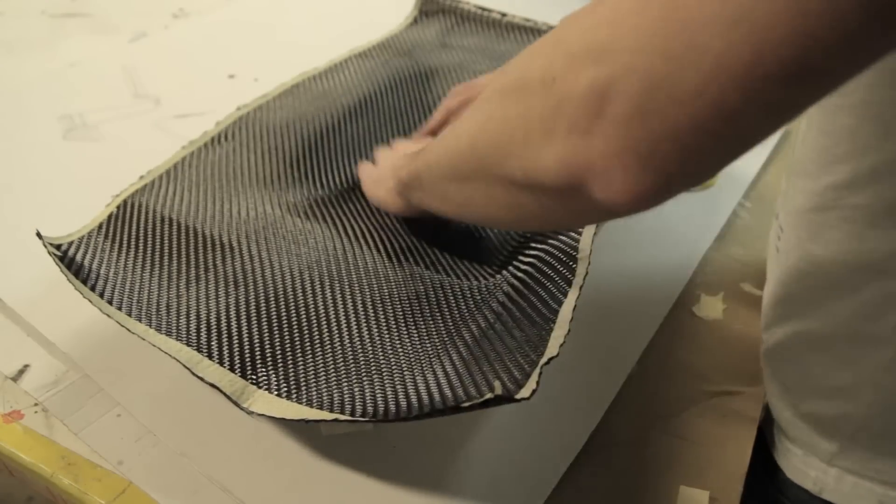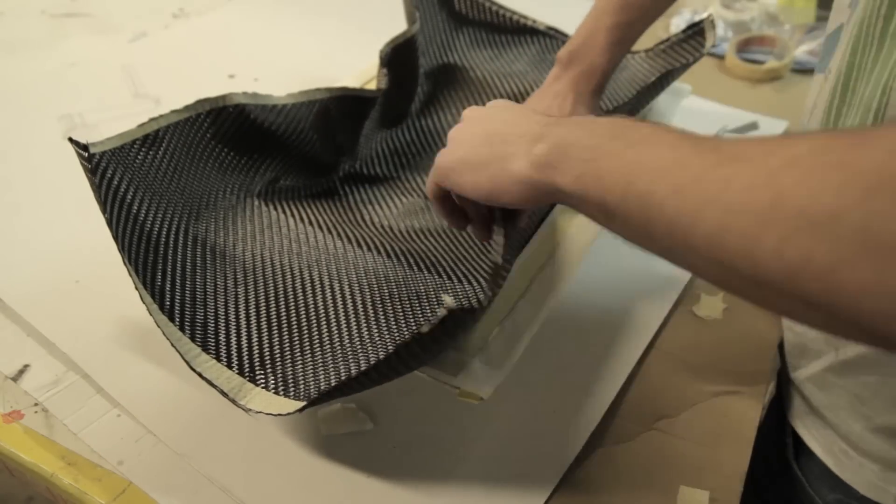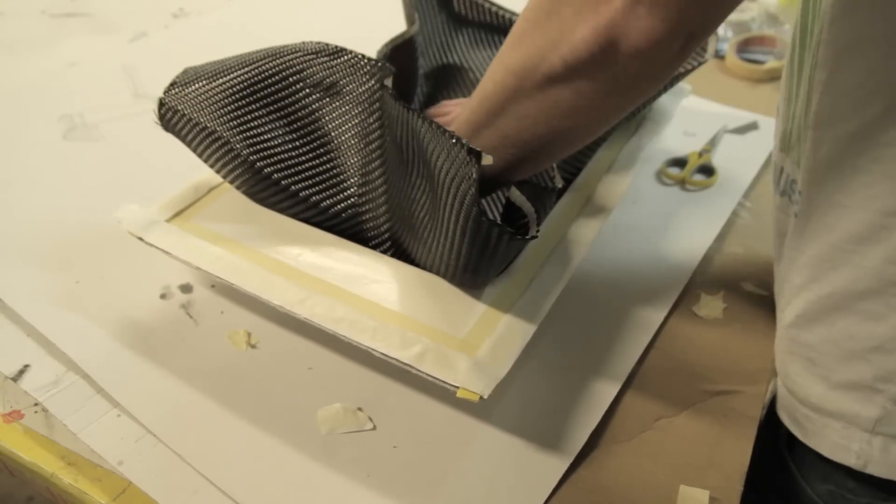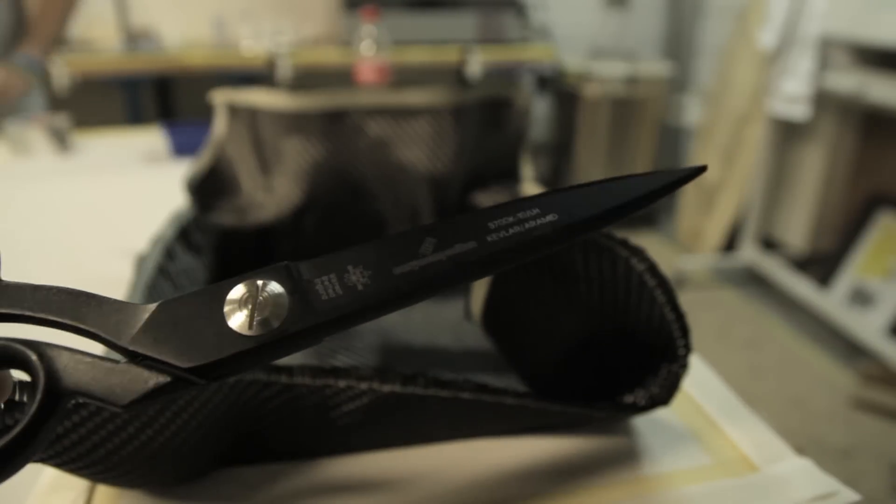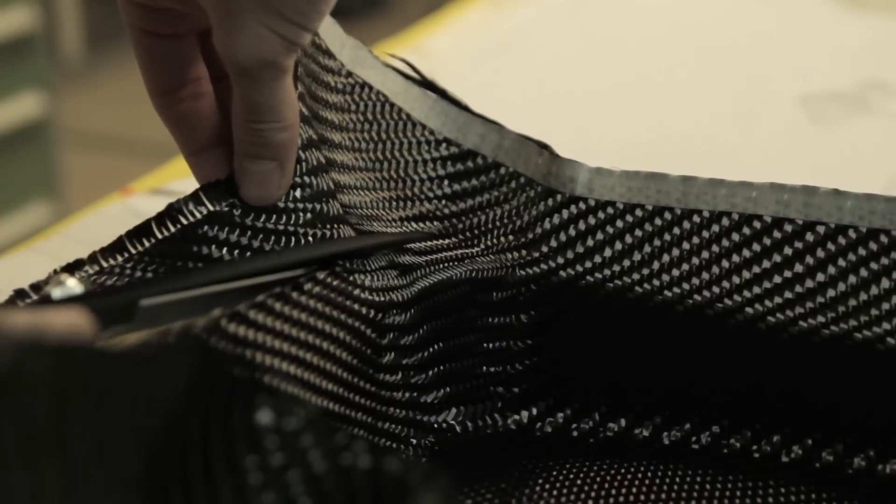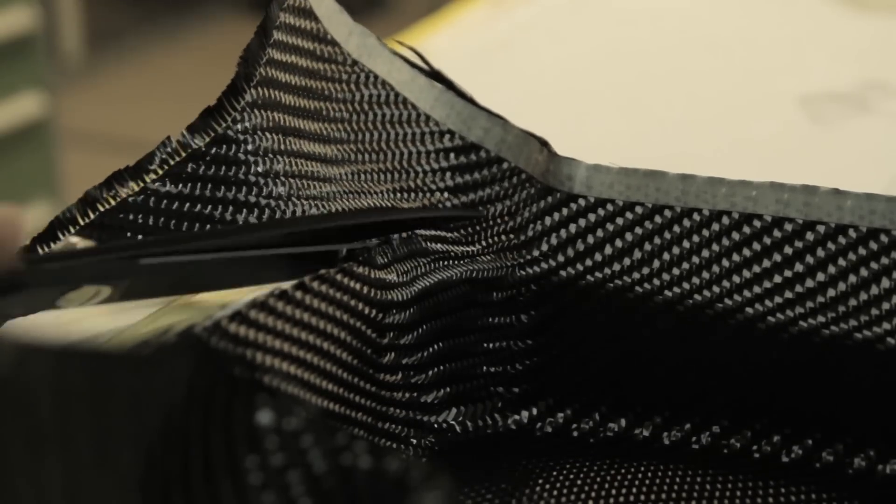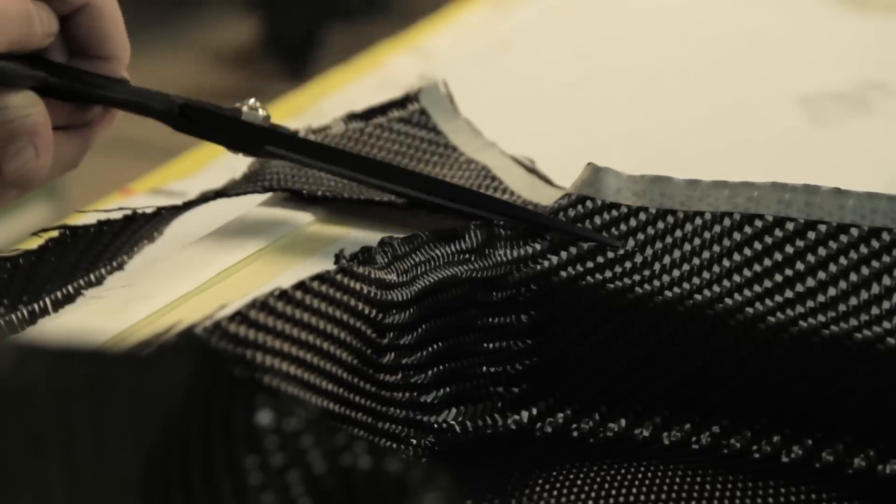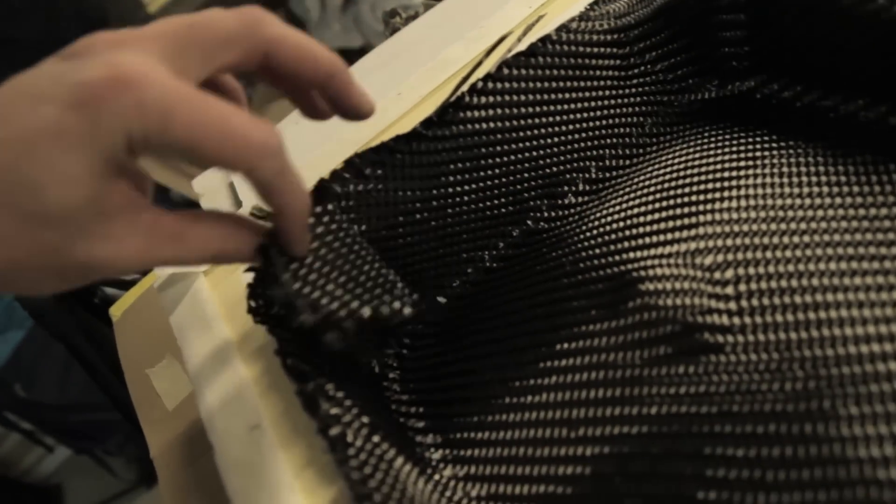For the first layer I'm using a carbon fiber 650 grams 12K, so 12,000 weaves per strand. To cut everything it's very handy to have a good pair of scissors. Here I'm using the Easy Composites scissors. Normally they're made for Kevlar and aramid, but you're able to use them as well for carbon fiber.